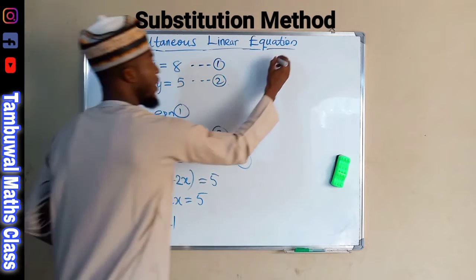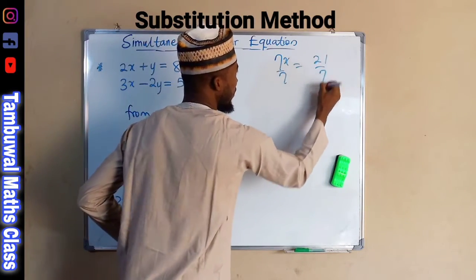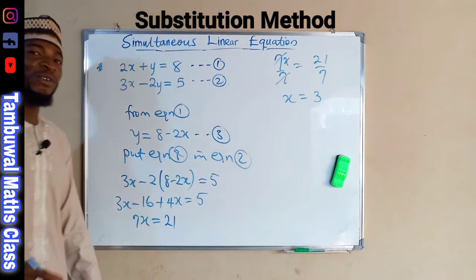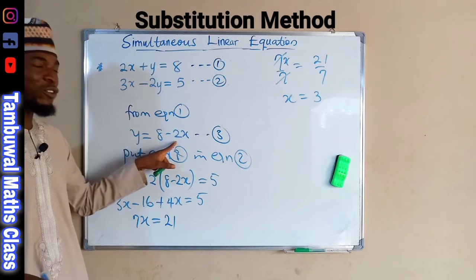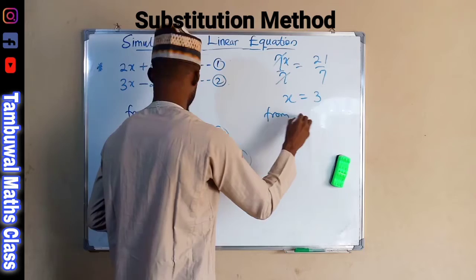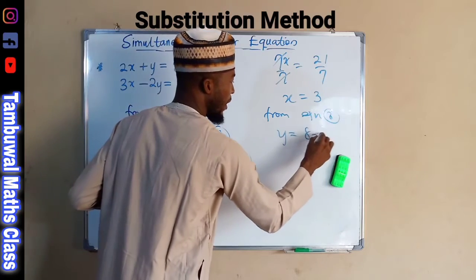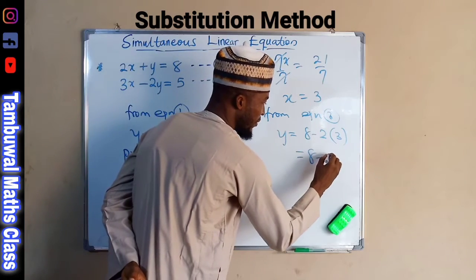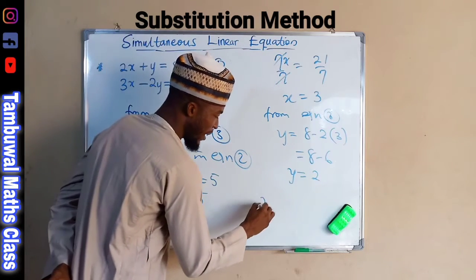To find the value of x, we divide both sides by 7: 7x over 7 equals 21 over 7. The 7s cancel, so x equals 3. From equation 3, y equals 8 minus 2x, and substituting x equals 3, we get y equals 8 minus 6, because 2 times 3 is 6.